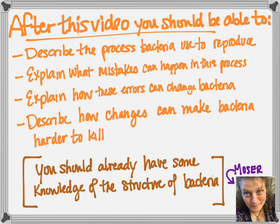Can you describe the process bacteria use to reproduce? Can you explain where mistakes can happen in that process, and how those errors can change bacteria? Can you describe how changes could make bacteria harder to kill?